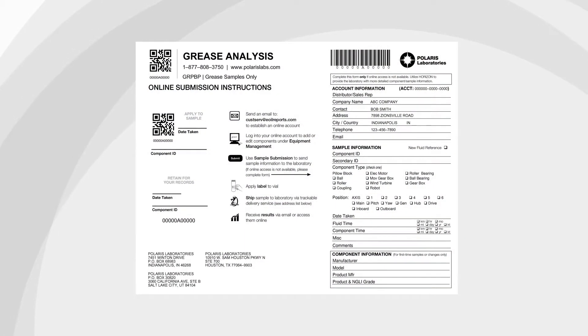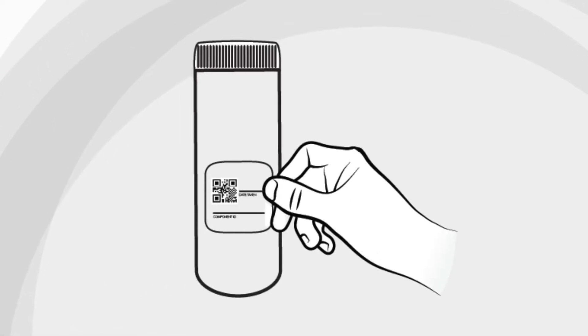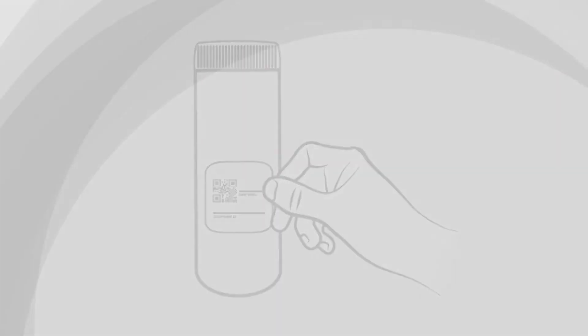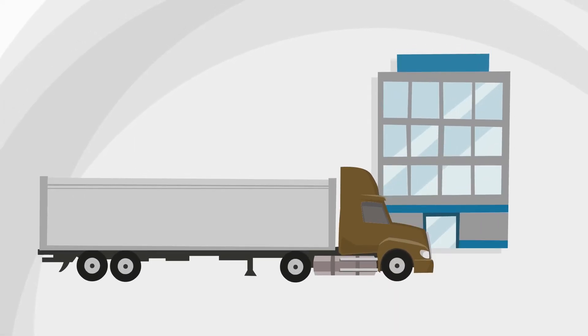Fill out the sample information by hand or submit your sample information online via Horizon. Then, place the label on the shipping tube and place in the mail to the laboratory nearest you.